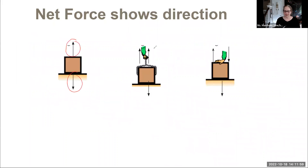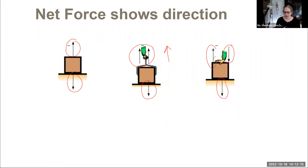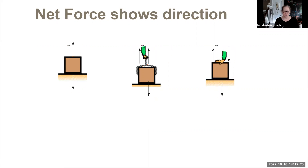If the two forces balance each other out, we're not going anywhere. If you have more pulling up than going down, then it would lift up. Notice the arrows can be all over the place — look at the head of the arrow. Both of these are heading down and the force of normal is heading up. So unless this guy is stronger than the normal force, it probably has no motion. Always look at the numbers when you get to those, and the ungraded one will help you out with that.